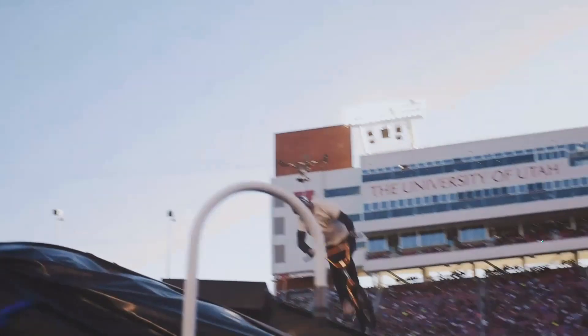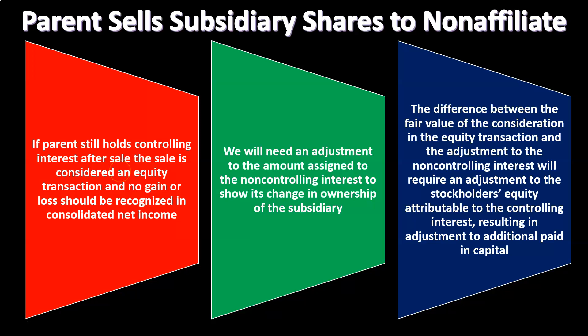We are talking about a situation where we have a parent-subsidiary relationship — a controlling interest — meaning the parent owns over 51 percent. In the time period of consolidation, the parent is then selling some of the shares of the subsidiary. What will be the impact?